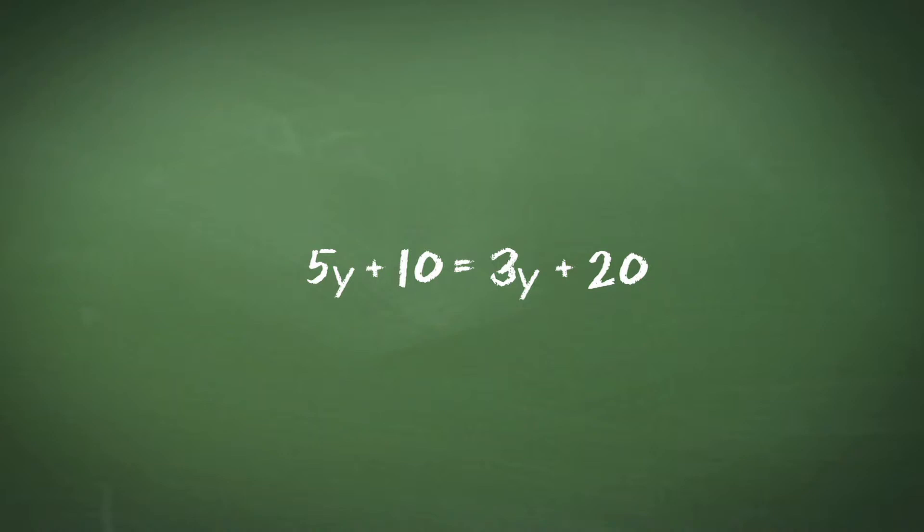When we have equations like this, the way to solve them is to get all the variables, in this case the y's, on one side of the equation, and all of the numbers or constants on the other side.